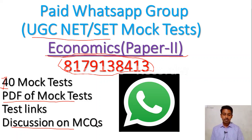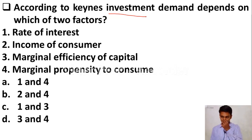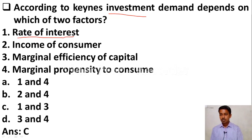The first question is: according to Keynes, Investment Demand depends on which two factors? Option A: rate of interest. Option B: income of consumer. Option C: marginal efficiency of capital. Option D: marginal propensity to consume. Keynes Investment Demand depends on rate of interest and marginal efficiency of capital — these two are in option C. So option C is the correct answer.